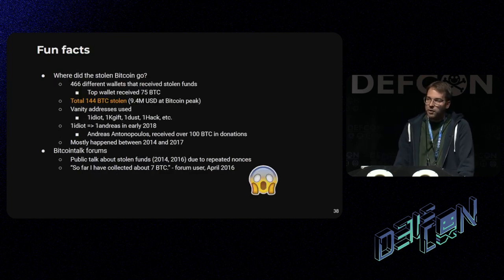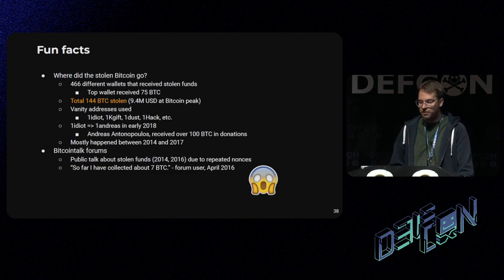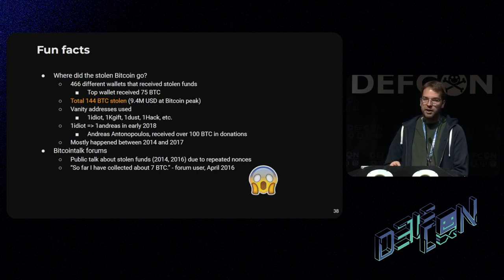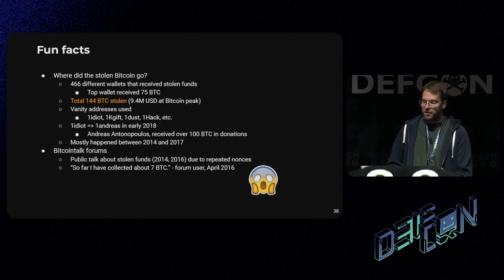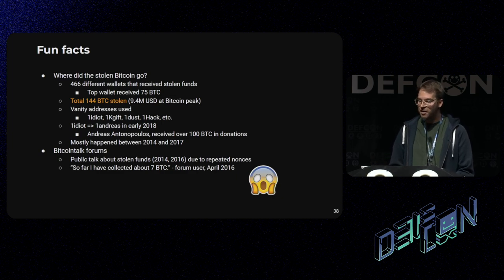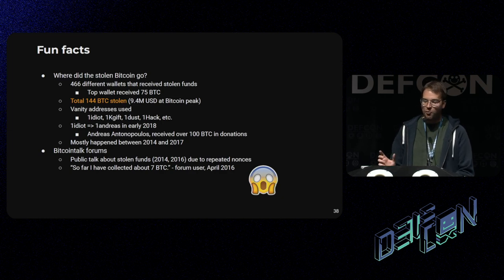We wanted to see what happened to those stolen Bitcoin. We tracked that and found that about 140 Bitcoins were stolen in total — that's about 10 million USD at Bitcoin's peak price. We also saw that some of the addresses that received that stolen money had readable names in them, like 'one hack', 'one gift'. And there is one 'idiot' address that sent the money it stole to another address called 'One Andreas', which is owned by a guy who made significant contributions to the Bitcoin ecosystem. When people found out about this in 2017, they decided to make a ton of donations to that guy. So it looks like the 'one idiot' guy stole Bitcoin to give it back as a donation.